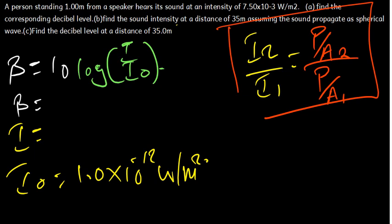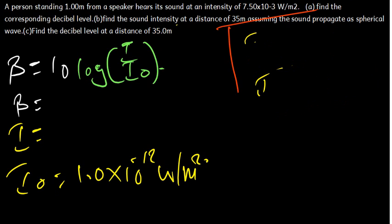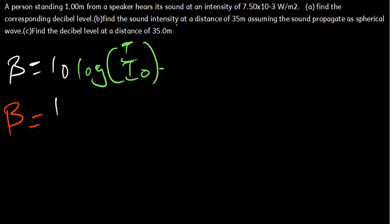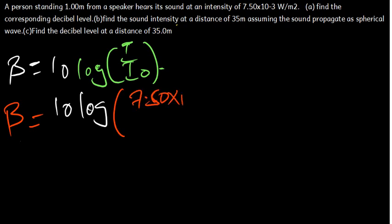For Part A, we need to find the corresponding decibel level using the formula β = 10 log(I/I₀). We have the intensity — we've been told it's 7.50 times 10 to the power negative 3 watts per square meter.